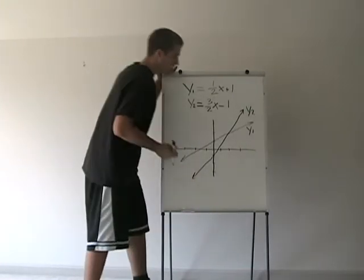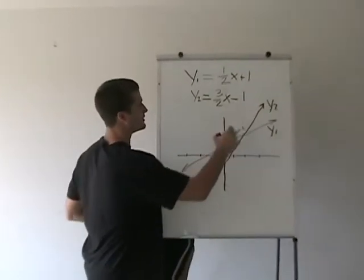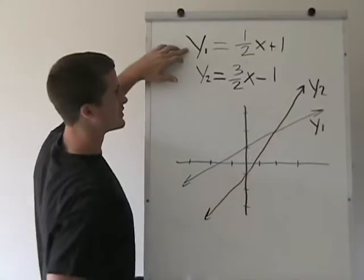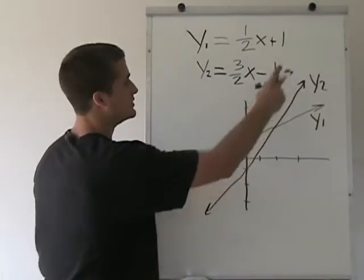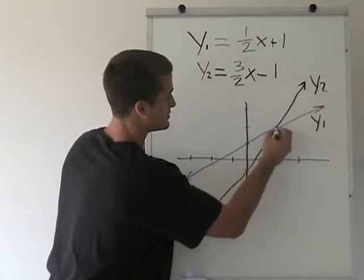So what we want is we're given this graph here. Here's y1, our first function, and then here's y2, and we want to know where they meet, so we want to know this intersection point right there.